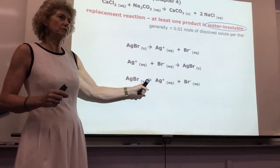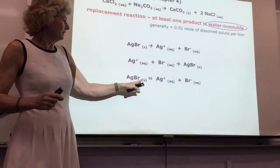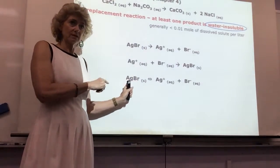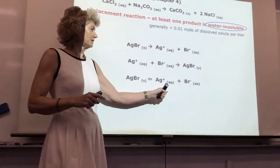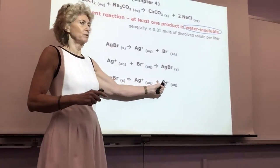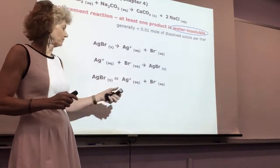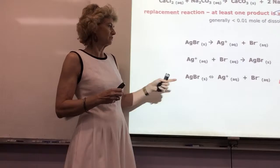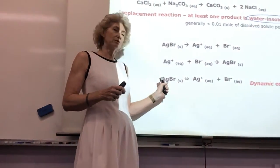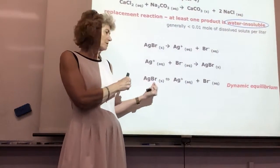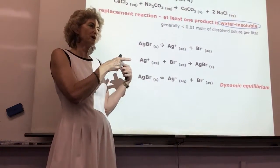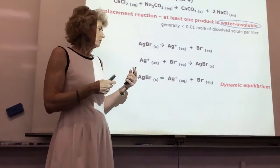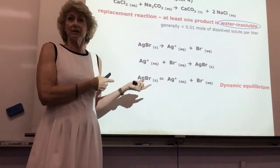We write it with a double-headed arrow. This is pretty much what you'll see for the rest of this chapter: a solid dissociating into its component ions. The question is how far to the right does this equilibrium lie. Just like all other equilibria, it's dynamic — if you could zoom in with a microscope, you'd see it forming ions and then solidifying, but it just looks like nothing's happening.